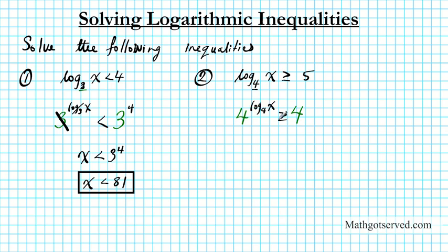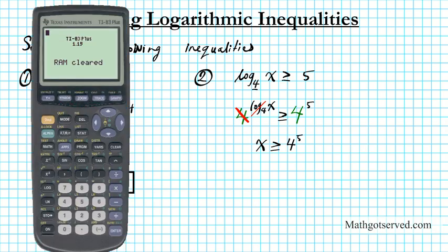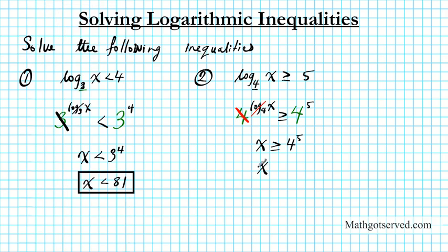It's greater than or equal to 5. On the left side, these are inverse operations — exponents and logs — so we have x is greater than or equal to 4 to the 5th power. You can work that out with your calculator: 4 raised to the 5th power is 1024. So our final answer is x is greater than or equal to 1024.